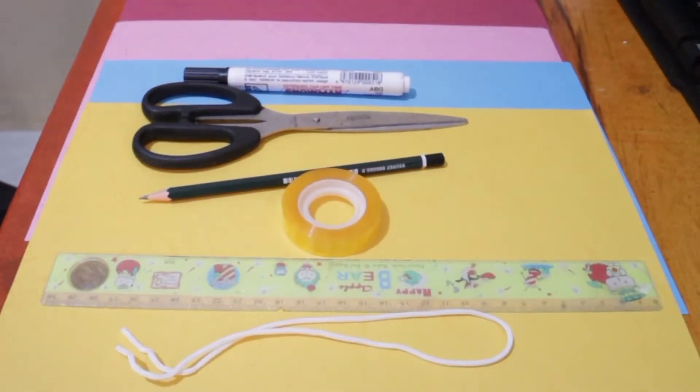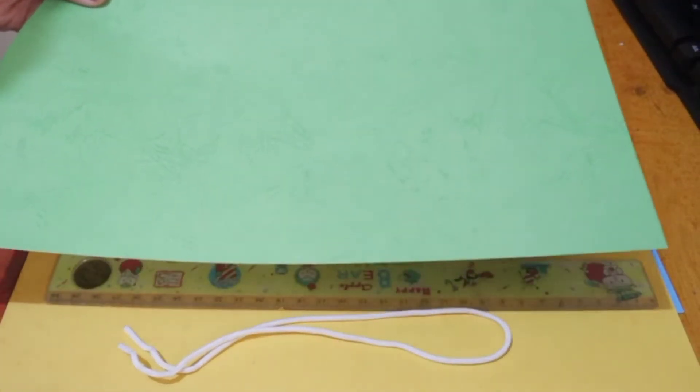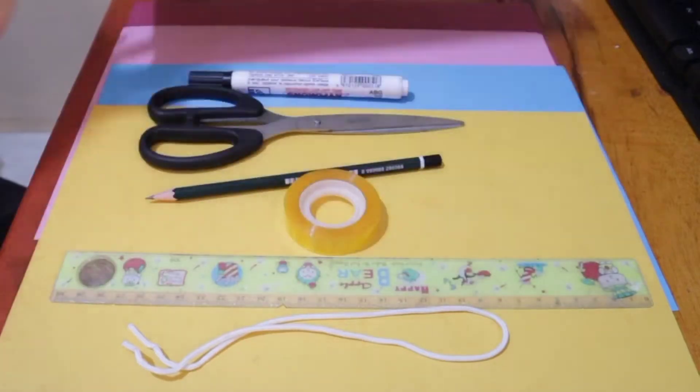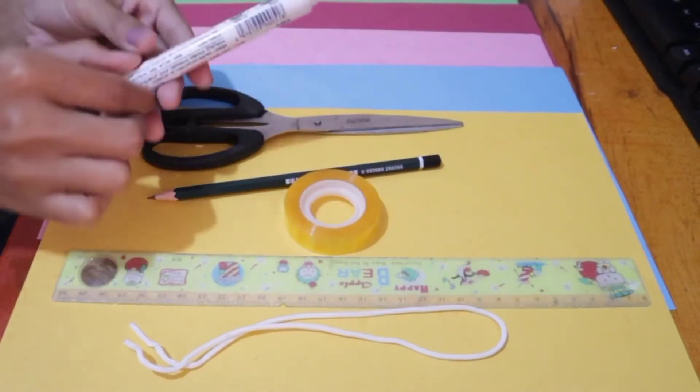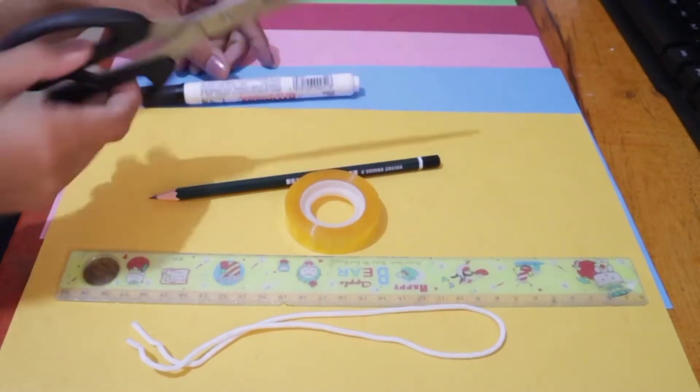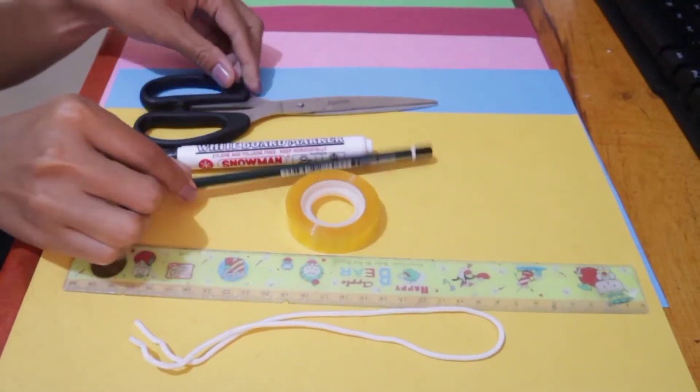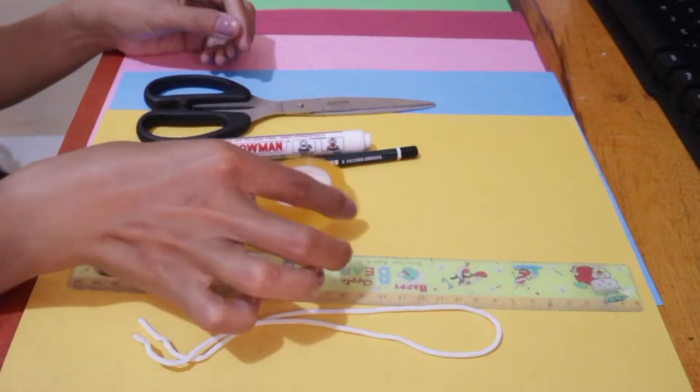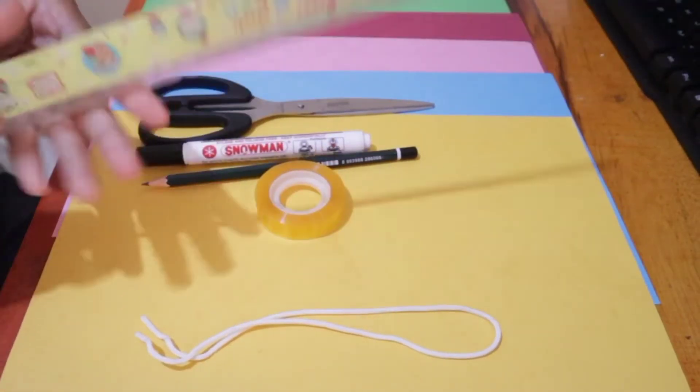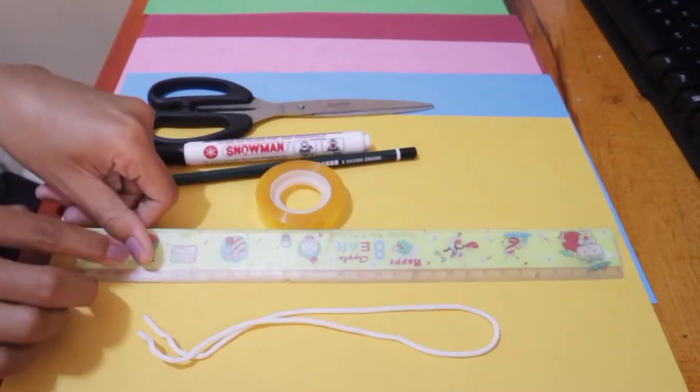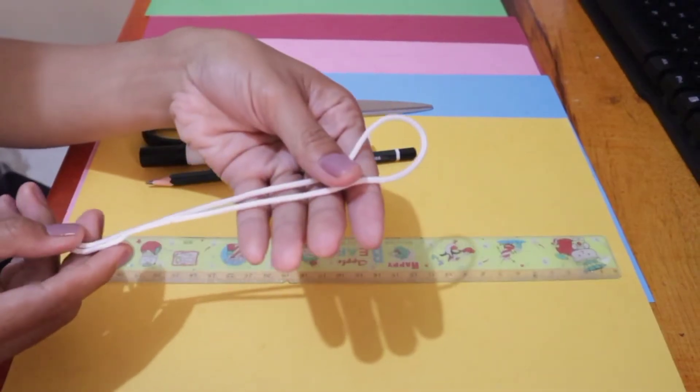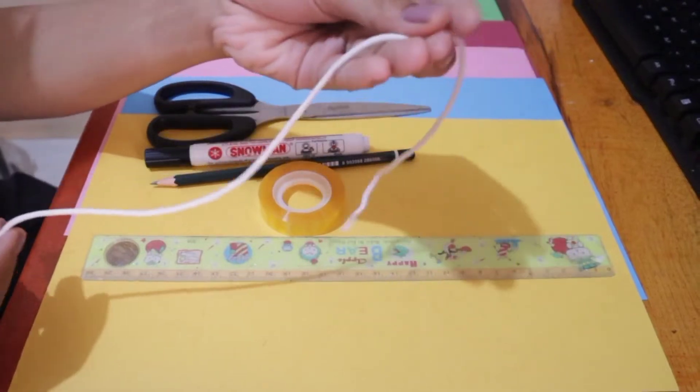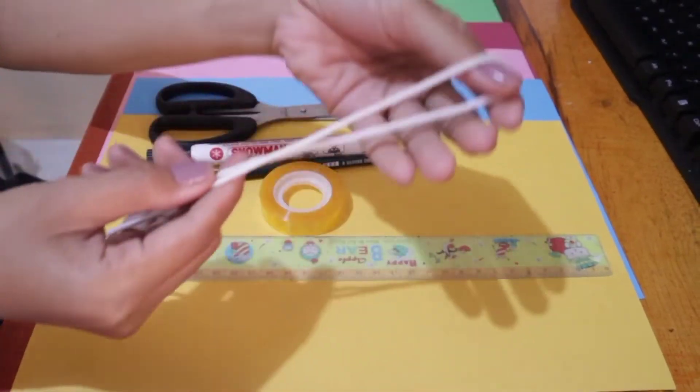The materials that we're going to use are buffalo papers, but you can also use another paper that you have at home. Next, marker, scissors, pencil, tape, ruler, and the last is row. You can also use another kind of row because I have this so I'm going to use this row.